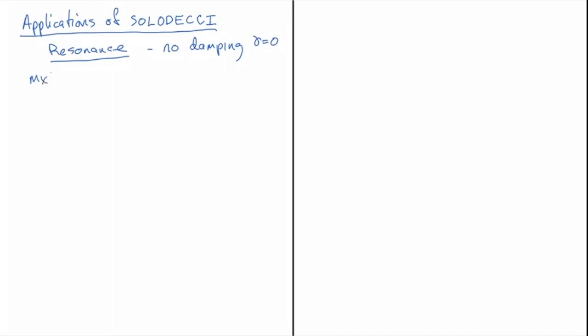And so what we have is mx double prime plus kx equal, and now I'm going to be taking this mass spring and forcing it periodically. So I'm going to force it with a force amplitude F naught, and it's going to have a cosine waveform so that I'll be forcing it at a frequency omega.